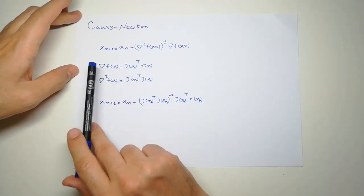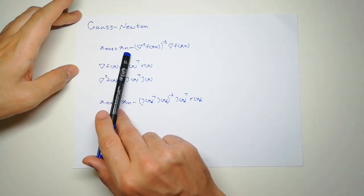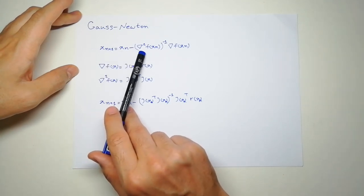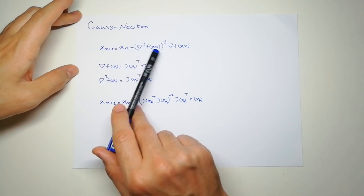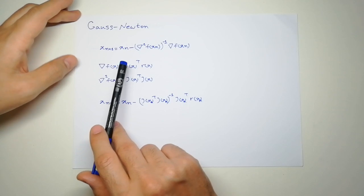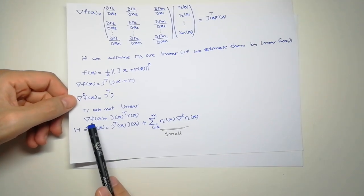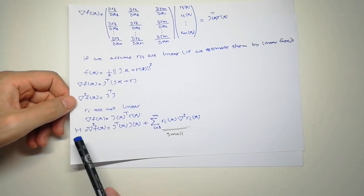It's an iterative approach. We start from a point and the next point is going to be the second-order derivative of the function inverse multiplied by the gradient of the function.